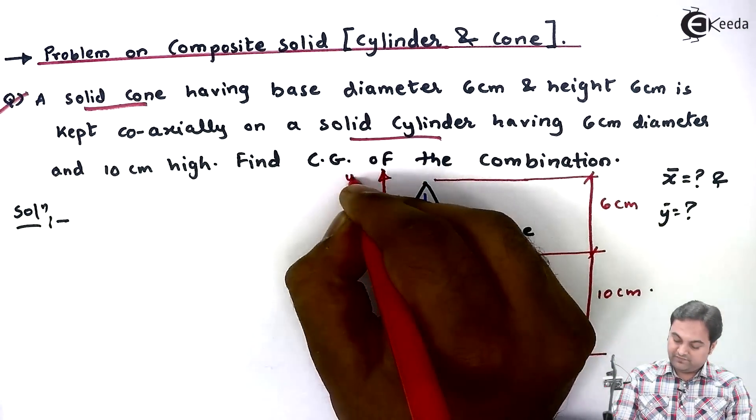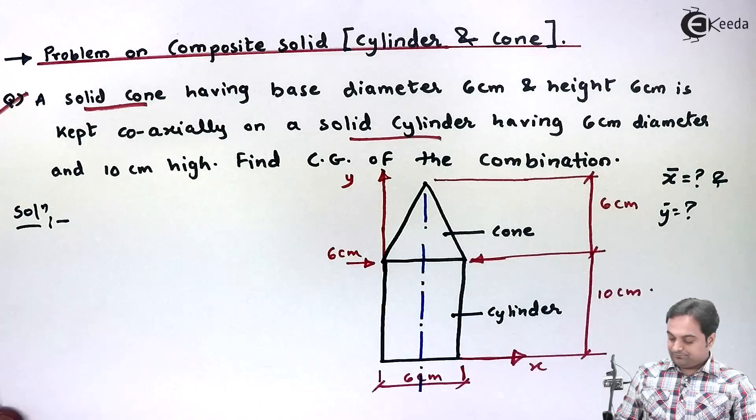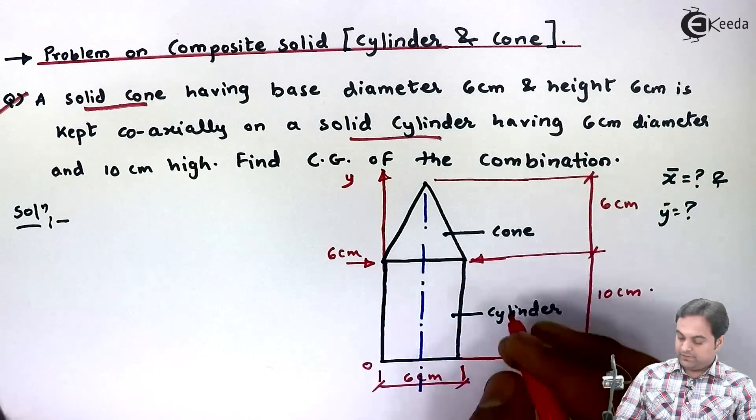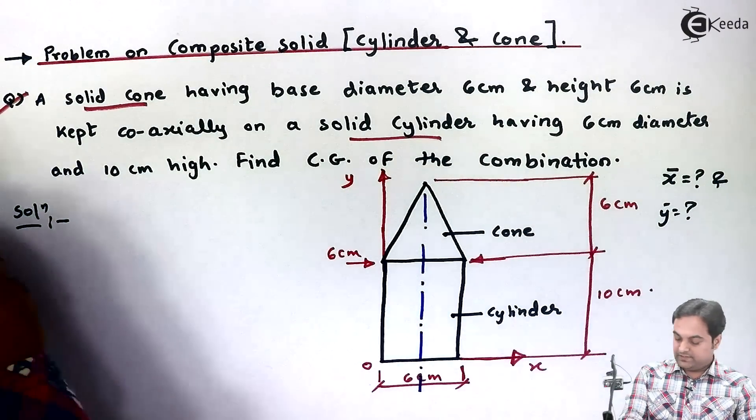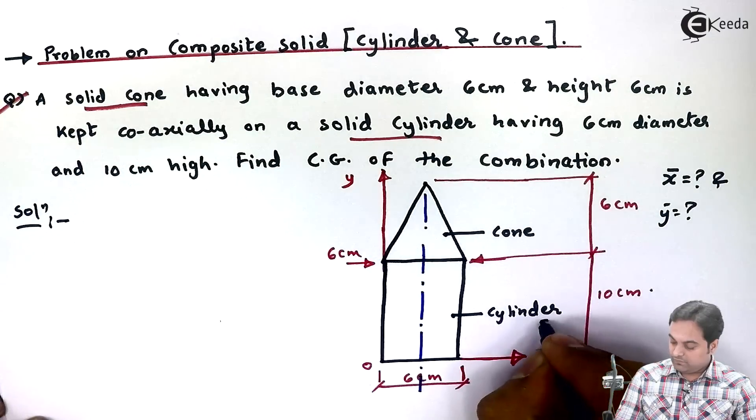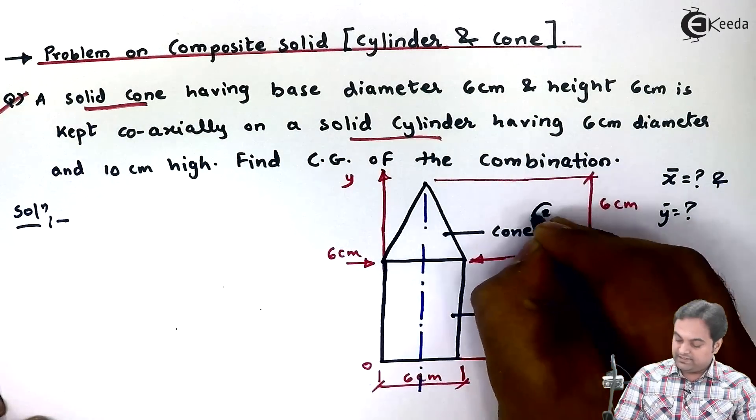So here we have X and Y axis. This is the origin. Now I'll consider cylinder as the first solid, cone as the second solid.